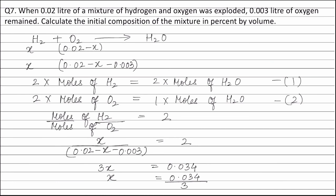Volume of hydrogen is 0.034 divided by 3 litres. Therefore, percentage of hydrogen is equal to volume of hydrogen that is 0.034 divided by 3 litres divided by total volume that is 0.02 litres into 100.